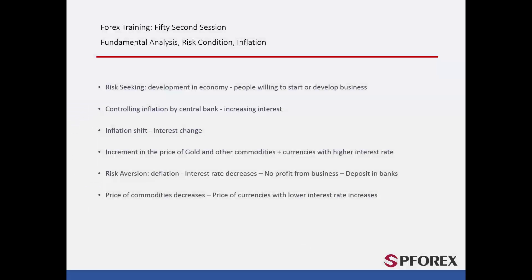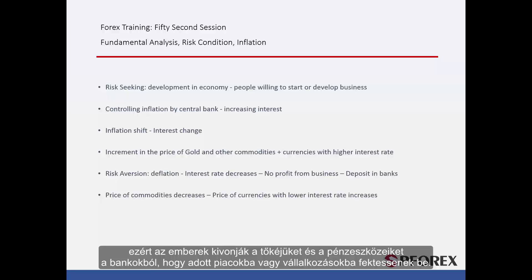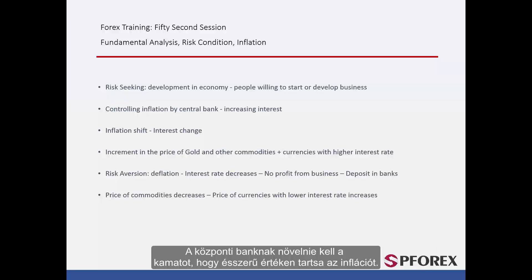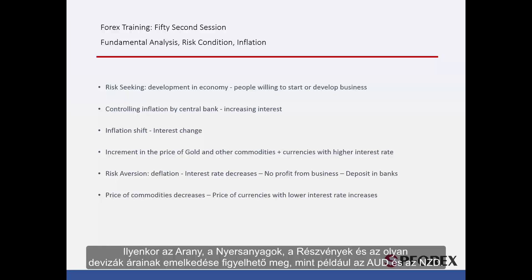Risk Seeking: Economic growth and low unemployment develop a risk-seeking condition, causing people to withdraw their capital and funds from banks to invest in a certain market or business. The central bank should raise the interest rate to keep inflation at a rational level. The rate of interest changes whenever inflation varies. In this condition, there is an increment in the price of gold, commodities, stocks, and currencies with higher interest rates, such as the Australian dollar or New Zealand dollar.